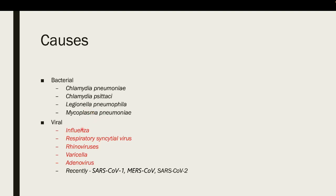For viral causes, atypical pneumonia can be caused by influenza, RSV (respiratory syncytial virus), rhinoviruses, varicella, adenovirus, and recently SARS-CoV-2 which is COVID-19. Previously there was SARS-CoV-1 which caused the pandemic in Hong Kong, and MERS-CoV which caused the outbreak in the Middle East. Most of these viruses cause self-limiting upper respiratory tract infections; however, in some severe infections the infection may spread to the lung parenchyma causing atypical pneumonia.